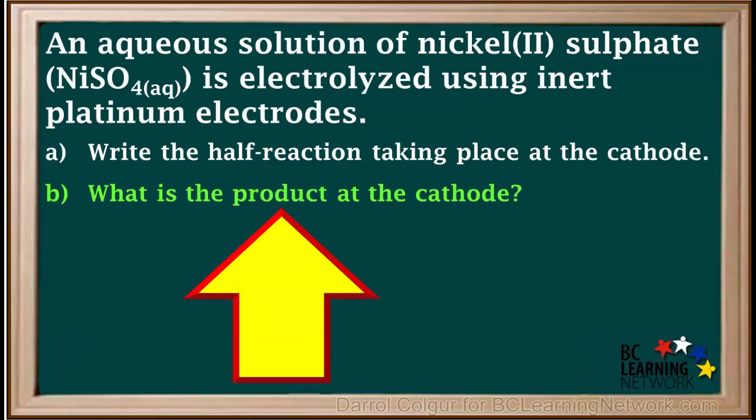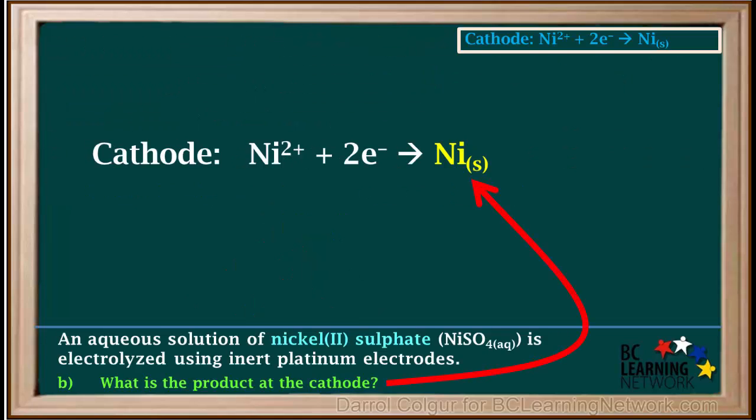Question B asks what is the product at the cathode? We can see from the half reaction that the product at the cathode is nickel solid or nickel metal. The surface of the cathode will gradually get coated with nickel as this process occurs.